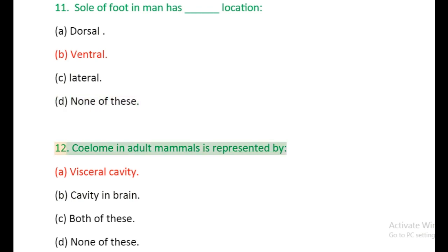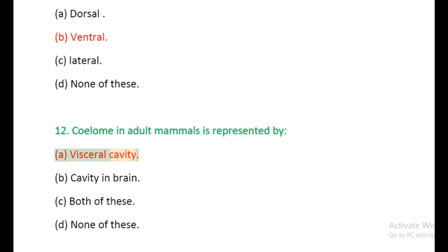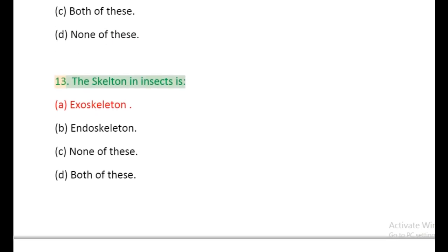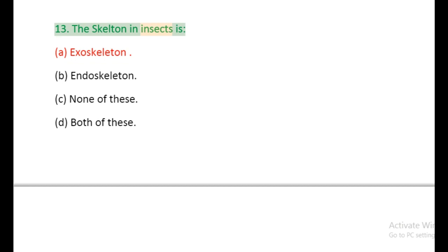Question 12: Coelom in adult mammals is represented by: (a) Visceral cavity, (b) Cavity in brain, (c) Both of these, (d) None of these. Question 13: The skeleton in insects is: (a) Exoskeleton, (b) Endoskeleton, (c) Both of these, (d) None of these.